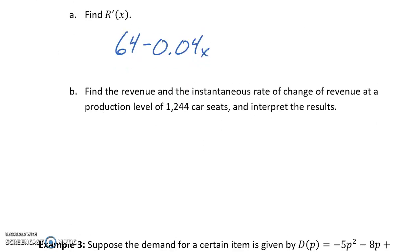In part b, we want to find the revenue and the instantaneous rate of change of revenue at a production level of 1,244 car seats, and interpret the results.